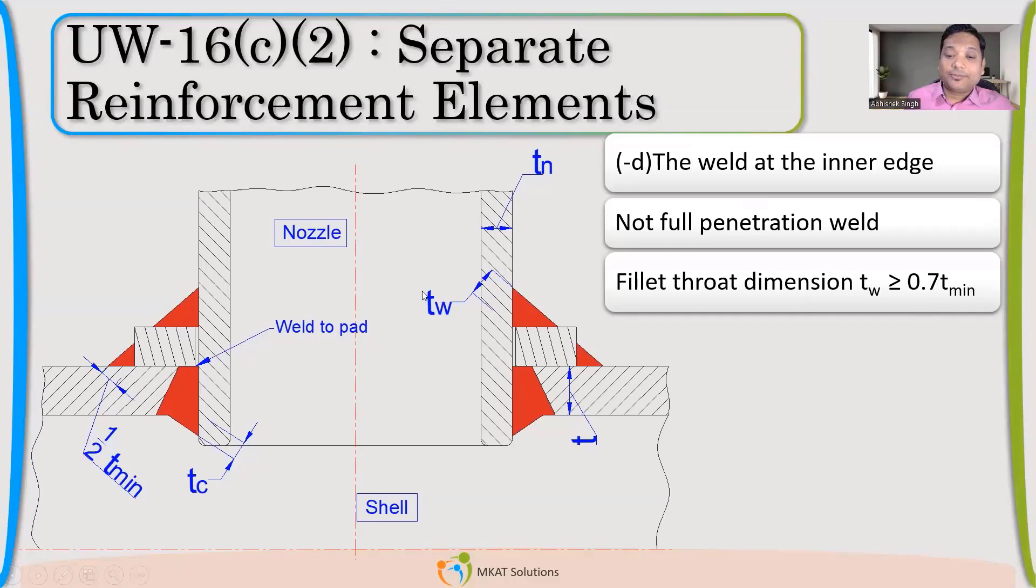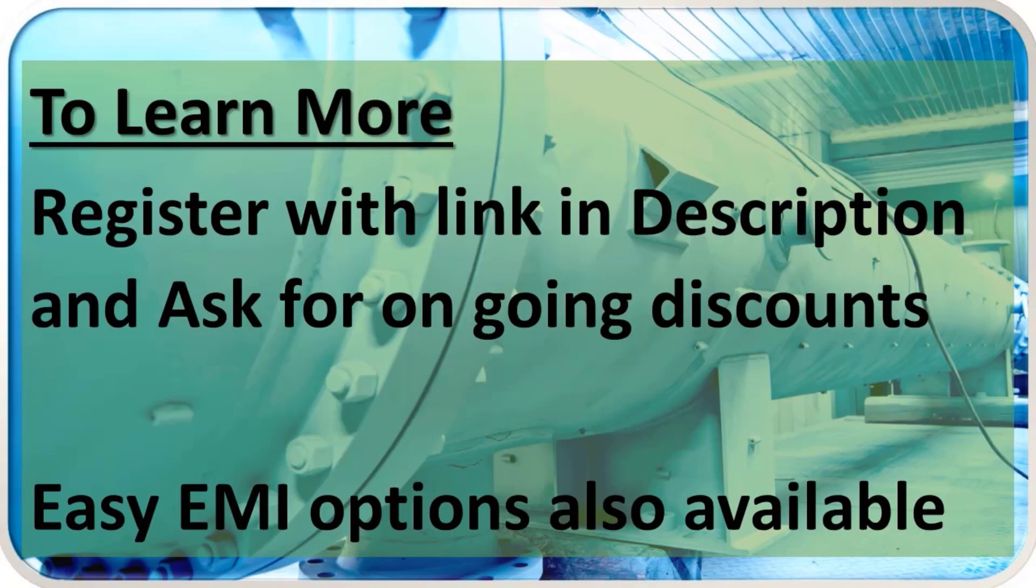So here your TC value is again, same, which is coming at the bottom side. So 0.7 times T minimum and 6 mm. But your TW value is different. You know why it's different? Because there is no full penetration. Once it's full penetration, the pad, if we are welding with full penetration, then it will, only you will require TC, which is smaller compared to your TW. Most of the time. For in-depth training and to learn more about these courses, register with the link in the description.